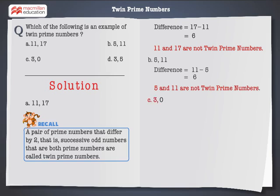Next, 3 and 0. Here the difference between 3 and 0 is 3. Therefore 3 and 0 are not twin prime numbers.